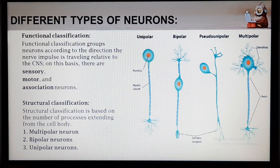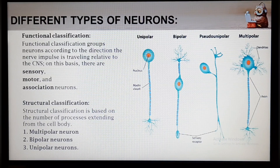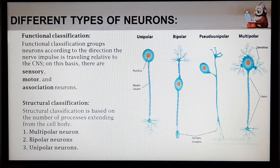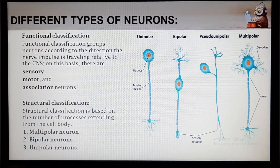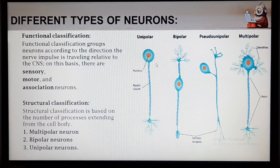Functionally, neurons are classified into three categories: sensory, motor, and interneurons. Sensory neurons, also called afferent neurons, send information from sensory receptors — like skin, eyes, nose, tongue, and ears — toward the central nervous system. Motor neurons, which are efferent, send information away from the central nervous system to muscles or glands. Interneurons send information between sensory and motor neurons, and most are located in the CNS. Structurally, neurons are multipolar, bipolar, or unipolar/pseudo-unipolar, classified according to their processes and cell body structure.